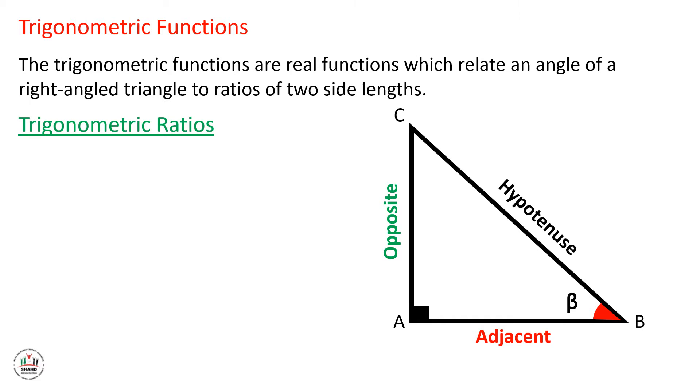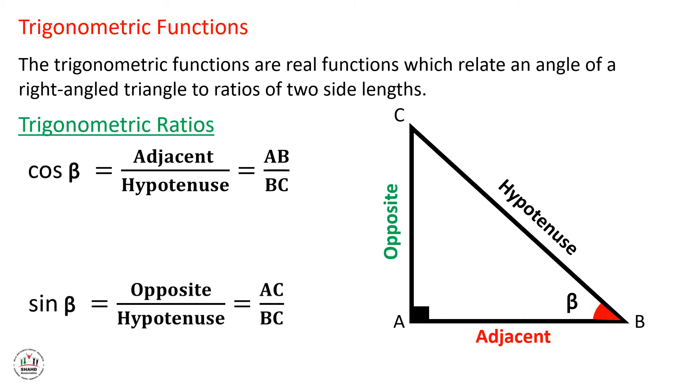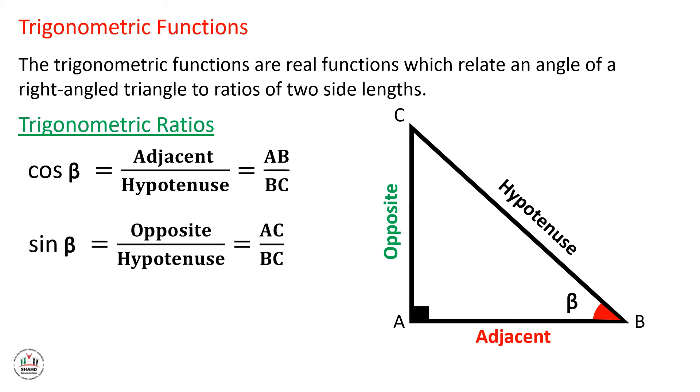Let's learn these trigonometric ratios. Cosine beta equals the adjacent side over the hypotenuse, which is equal in this example to AB over BC. Sine beta equals opposite side over the hypotenuse, which is equal in this example to side AC over BC.